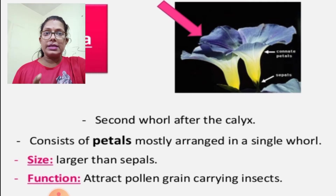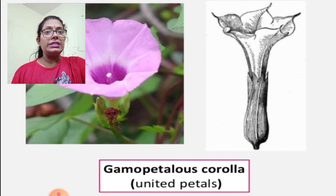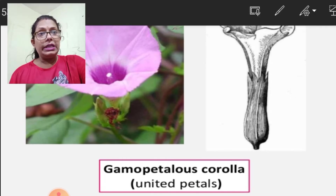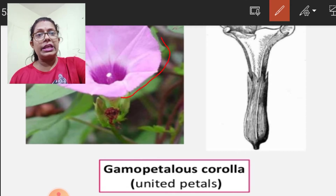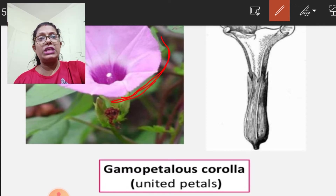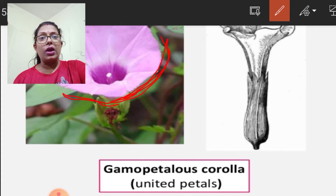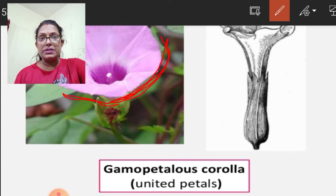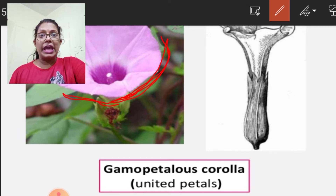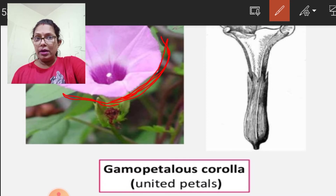In the gamopetalous slide, you can see that all the petals are united — no separation or notches are found between the petals. They form a bell-shaped structure. This is known as gamopetalous corolla, when all the petals are united.